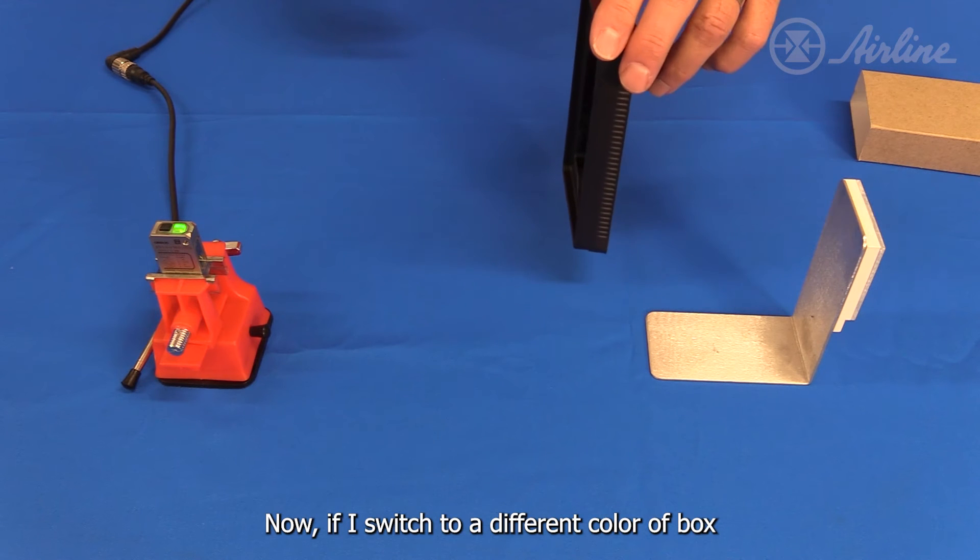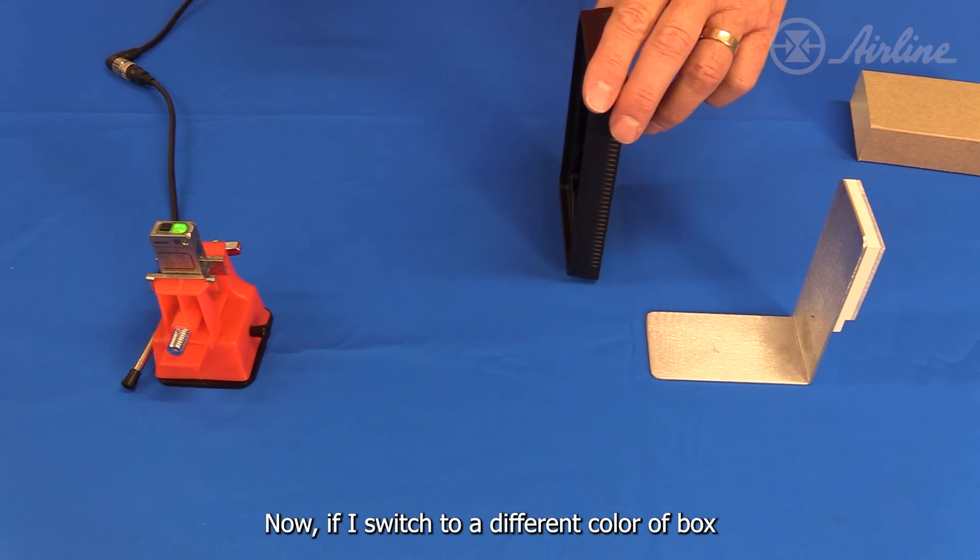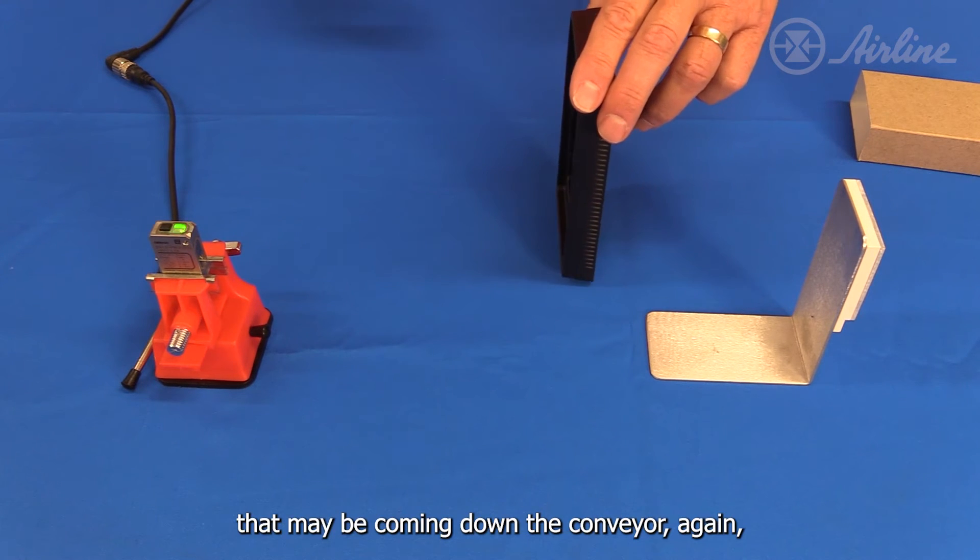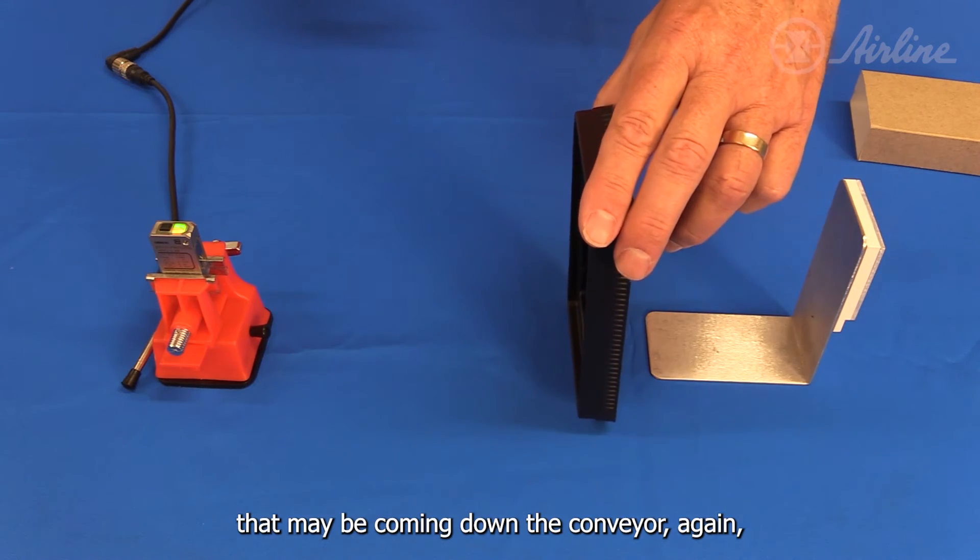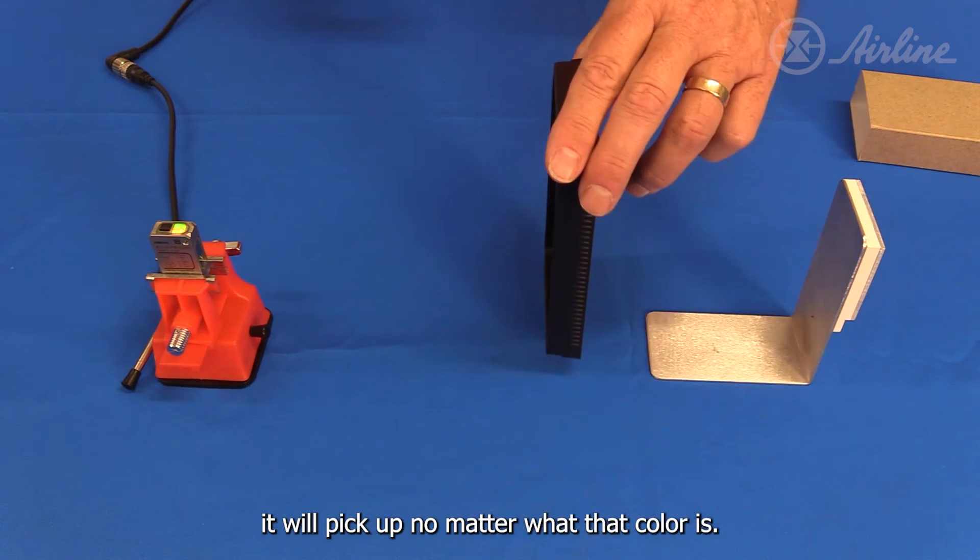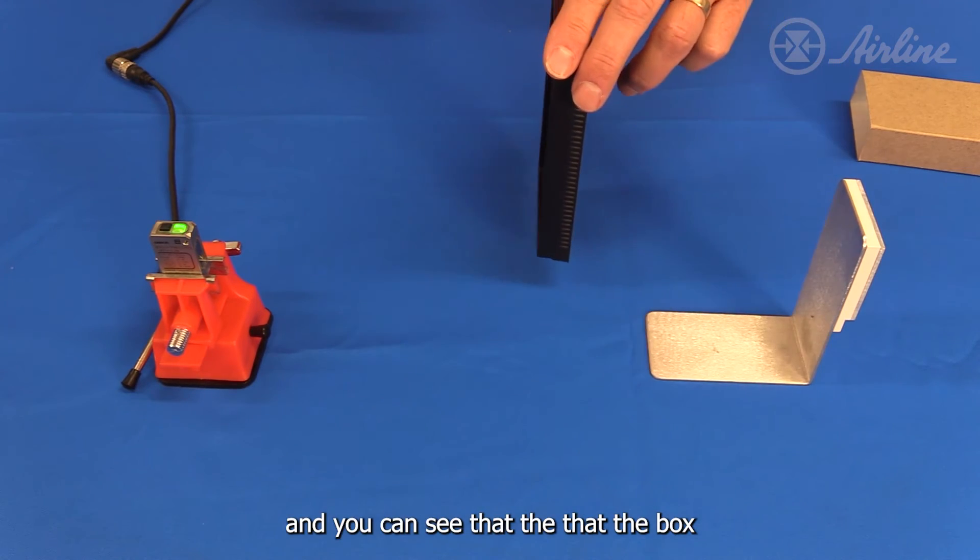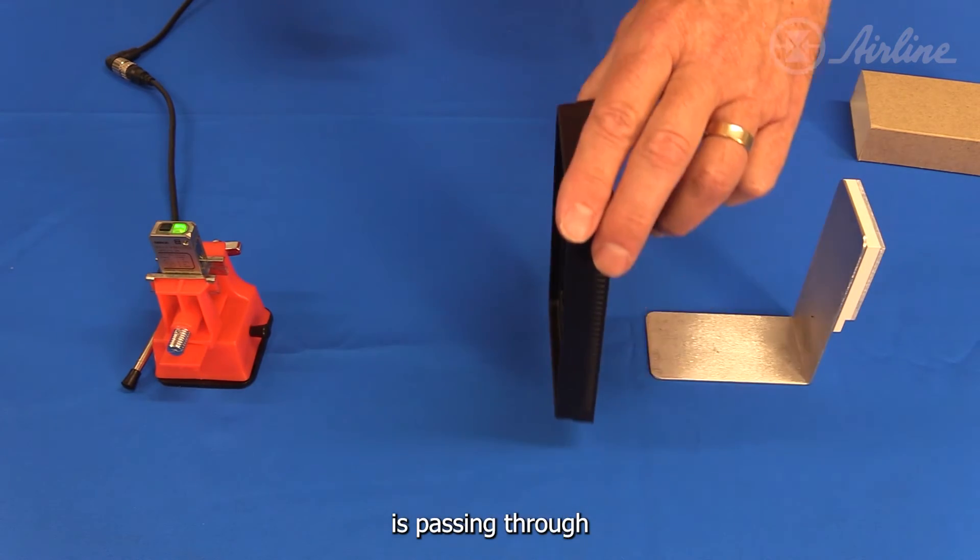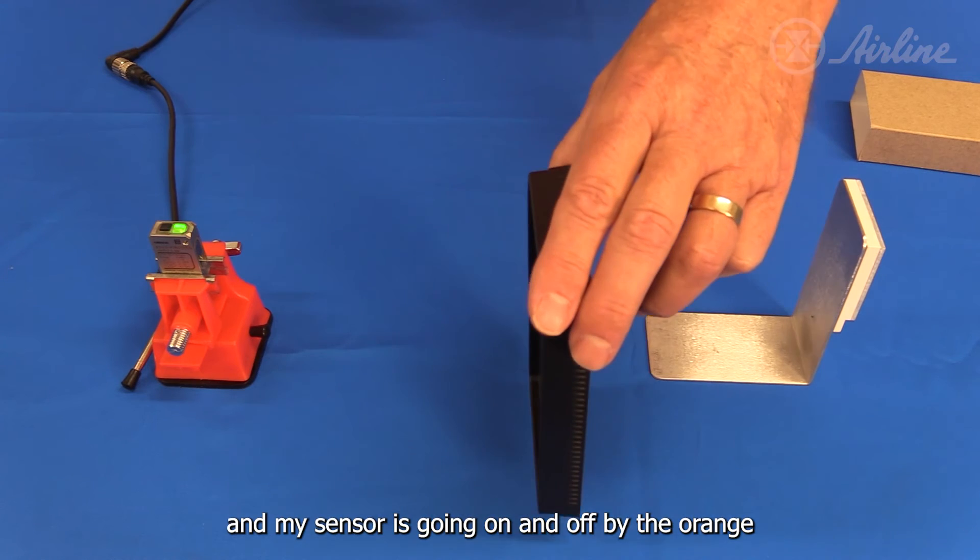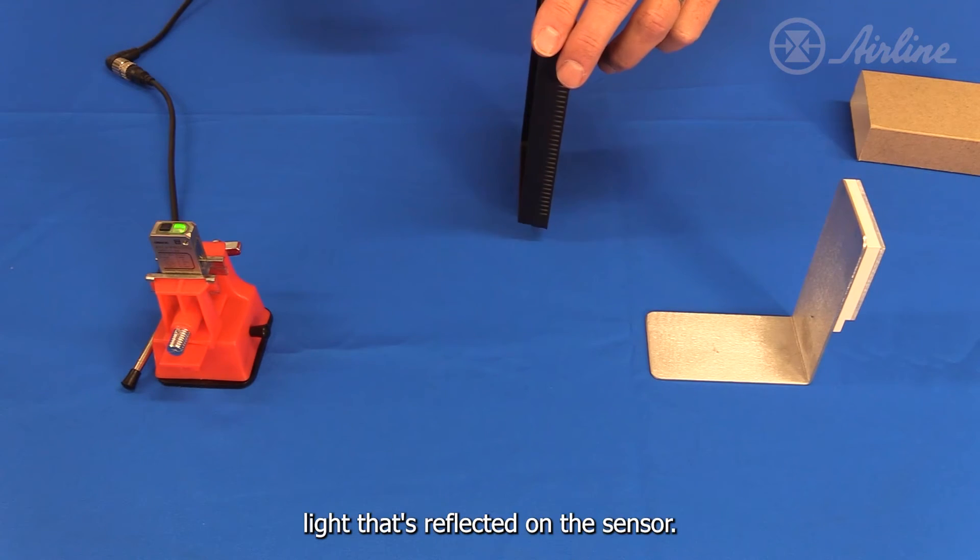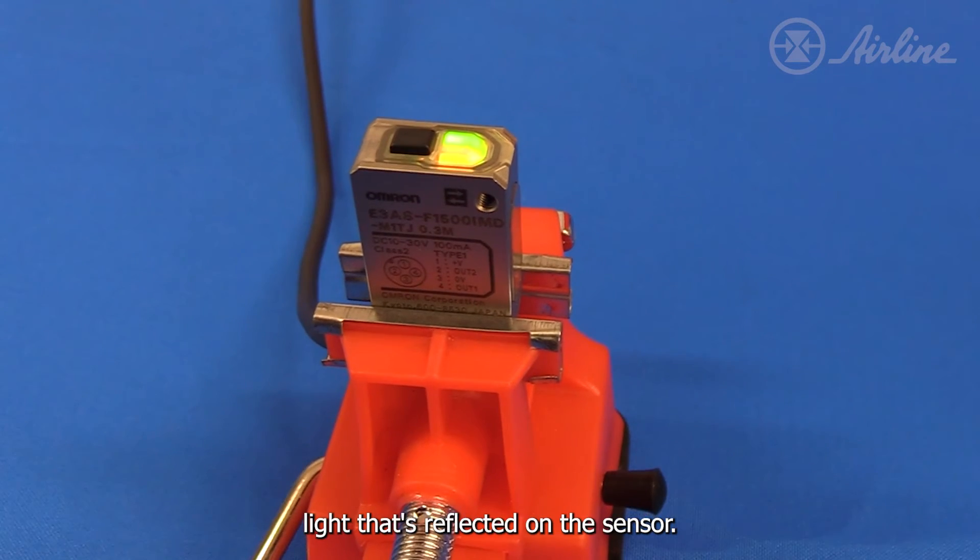Now if I switch to a different color of box that may be coming down the conveyor, again it will pick up no matter what that color is. In this case it's black, and you can see that the box is passing through and my sensor is going on and off by the orange light that's reflected on the sensor.